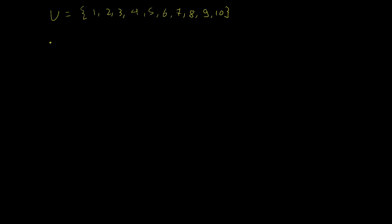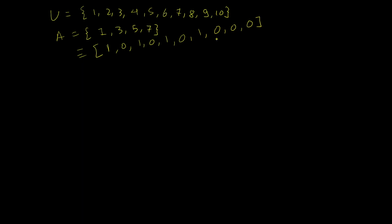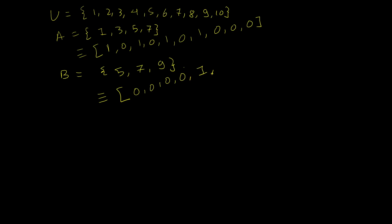Let's see the usefulness of this representation with an example. Set A = {1, 3, 5, 7} is represented by its bit string. Now let set B = {5, 7, 9}. Its representation has all zeros for elements 1 through 4, a 1 for 5, a 1 for 7, a 1 for 9, and 0 for 10.